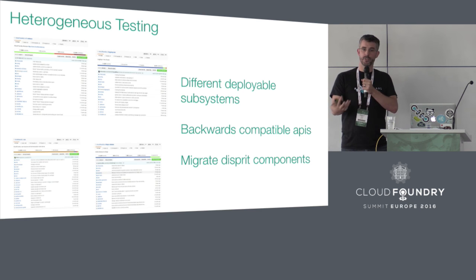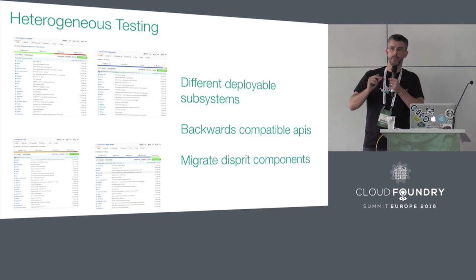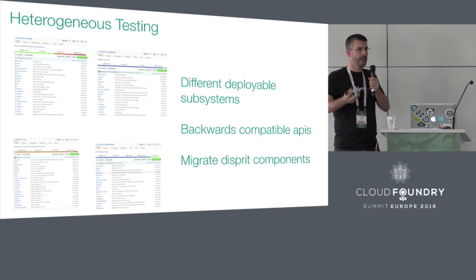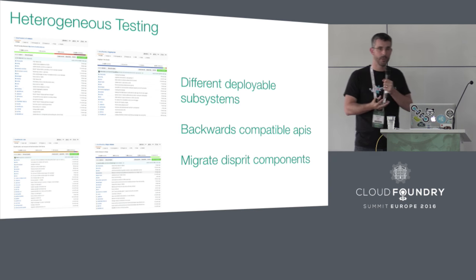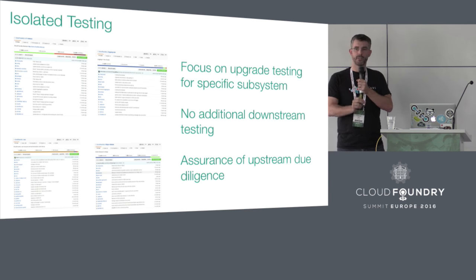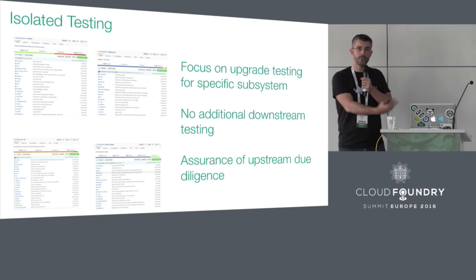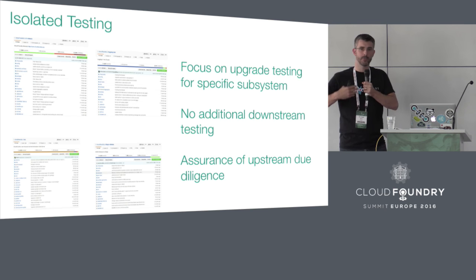The release engineer or platform operator can take a more granular approach to testing because they have a number of different subsystems. For example, if you deploy the latest version of Diego but back it with an old version of Postgres, then migrate Postgres to a new version, will Diego still be able to interact with it? So in addition to backwards compatible APIs, you can have a more granular approach to migrating disparate components. For individual teams, it allows for isolated testing — the owner of that subsystem can focus on their subsystem, and their view of the distributed system is way smaller, which allows them to move much faster.